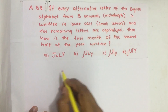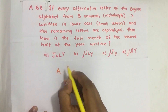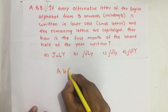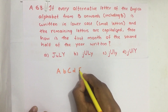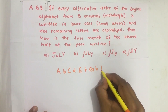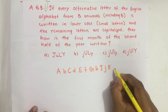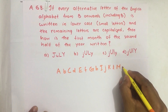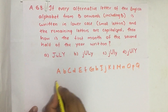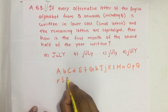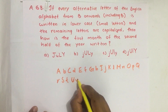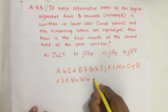As stated, alternative letters from B are written in lowercase. So: A, b, C, d, E, f, G, h, I, j, K, l, M, n, O, p, Q, r, S, t, U, v, W, x, Y, z — alternating from B onwards.